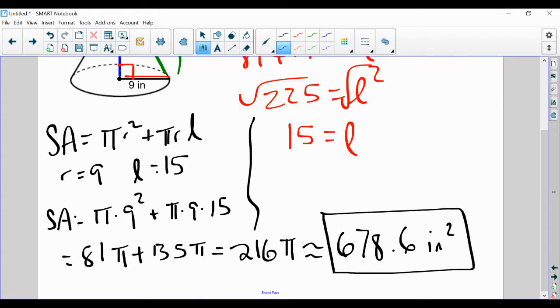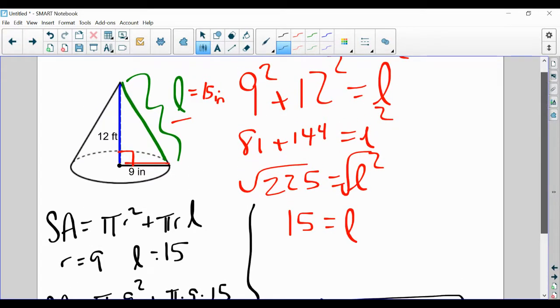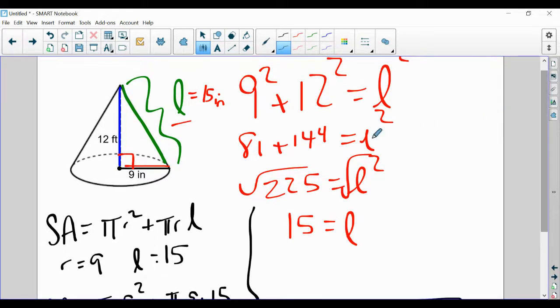Okay. So we saw two kinds of problems. One where we're given radius and slant height, and one where we had to use the Pythagorean theorem to find the slant height because all we had was the height. But there you go. That's how you find the surface area of a cone.